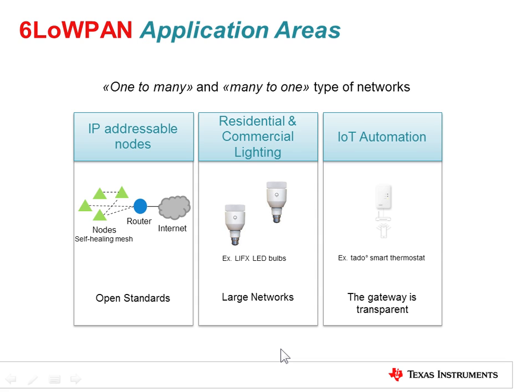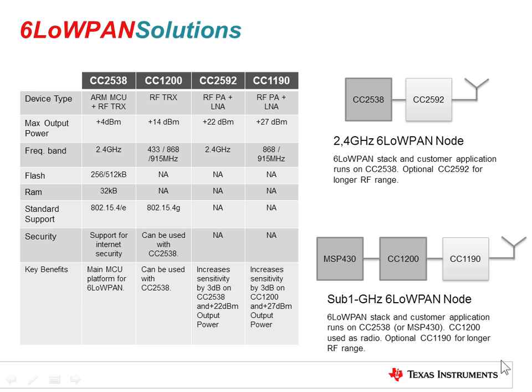An example product in the market is the wireless LED light bulb made by LIFX. Also, home automation with Internet connectivity and interaction between devices is gaining momentum in the market. An example of an upcoming home automation tool using 6LowPAN is the Tato smart thermostat. Now that we understand the applications, let's dive deeper into some of the products.